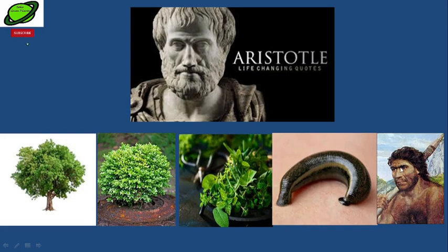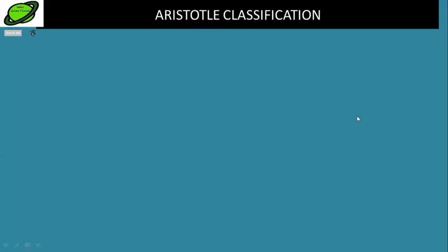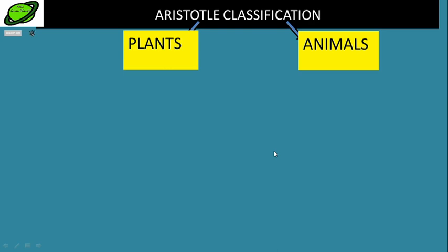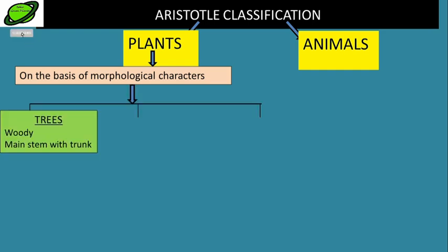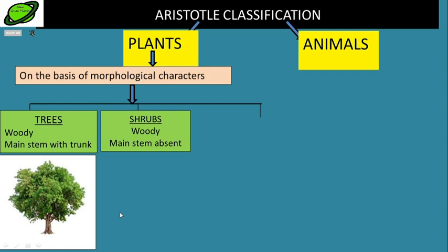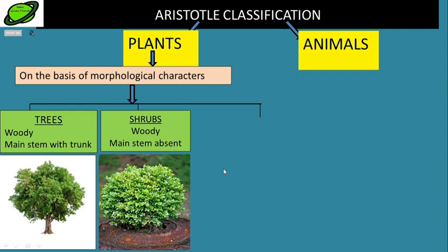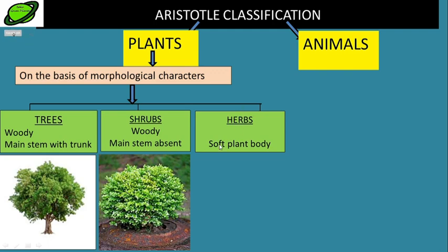Based on all these morphological features, Aristotle gave his classification. In Aristotle's classification, we have plants and animals. Plants were further subdivided on the basis of morphological characters into three categories: first, trees — those organisms which had a woody stem with a trunk; second, shrubs — plants which are woody but the main trunk is absent; and third, herbs — plants with a very soft body.